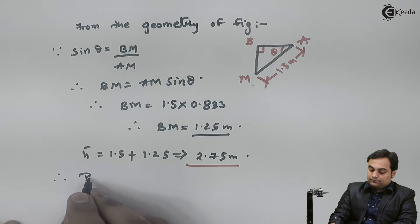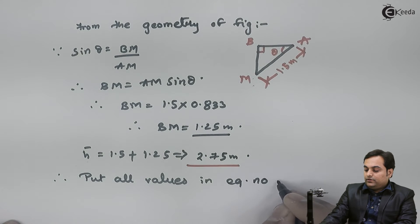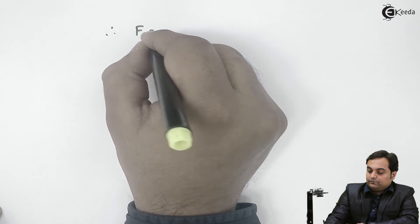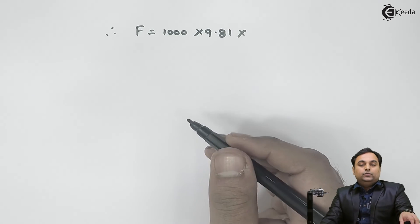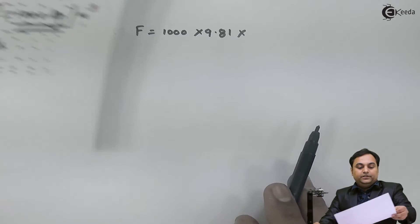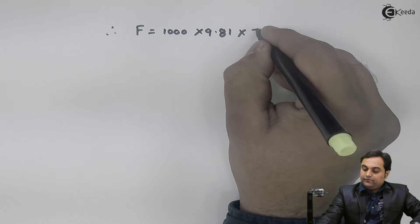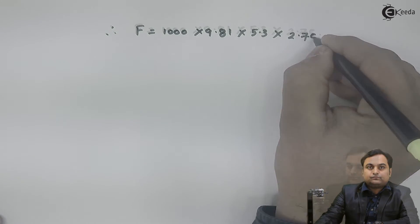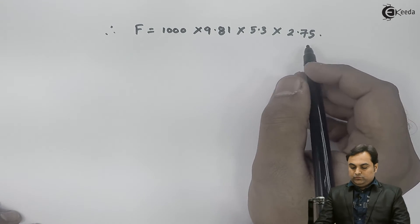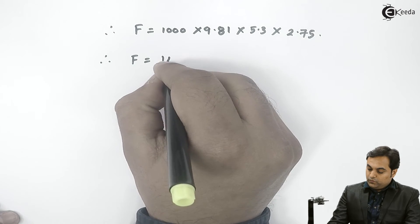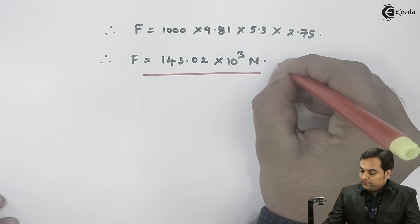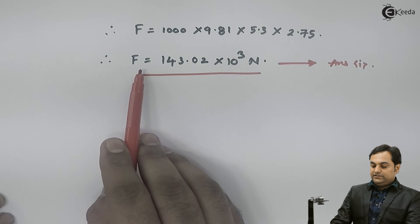Substituting all values into equation number one: F equals rho times G times A times H bar, so F equals 1000 times 9.81 times 5.3 times 2.75. Multiplying throughout, the hydrostatic force comes out to be 143.02 times 10 raised to 3 Newton. This is the first answer — the total pressure or hydrostatic force.